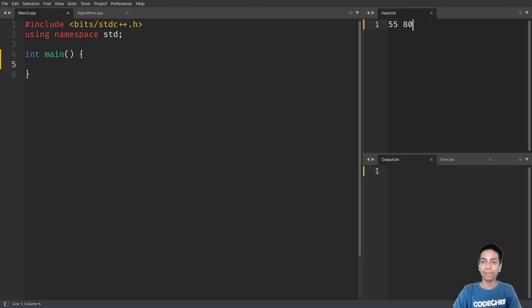I have pasted a sample input 55 and 80. Let's see if we get the correct output for that. We have A and B. Let's input them. Let's store the result in a pair that will be extended GCD of A and B.